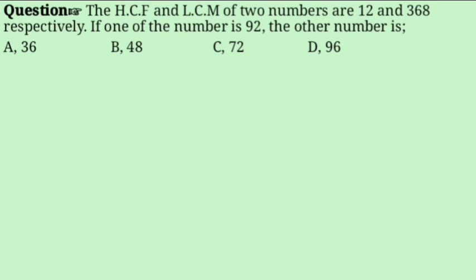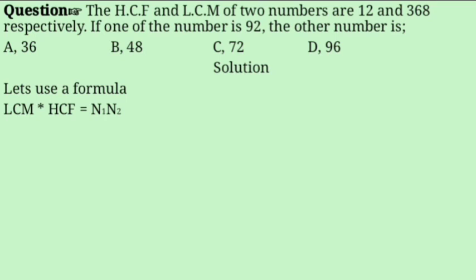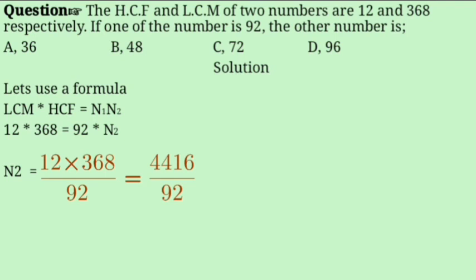New problem: the HCF and LCM of 2 numbers are 12 and 368 respectively. If one number is 92, find the other. Using the formula: LCM × HCF = N1 × N2. So 12 × 368 = 92 × N2, giving N2 = (12 × 368) / 92 = 48. The answer is 48.